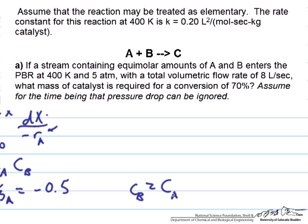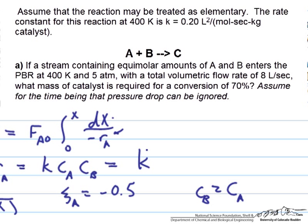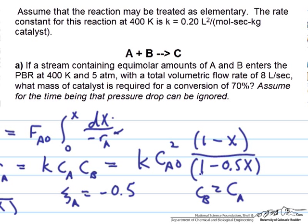So C_B is always equal to C_A. Everywhere we can replace C_B with C_A whenever it comes up. We can now plug this into our rate expression, that this is equal to k times C_A squared, or k times C_A naught squared times 1 minus x, where x is the conversion, divided by 1 minus 0.5x. This is our expression for concentration in terms of conversion, and we can now integrate that expression to solve for the catalyst mass.